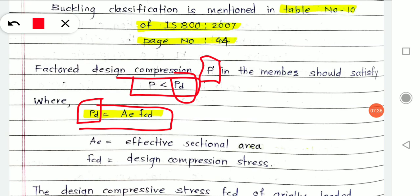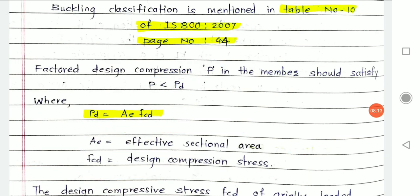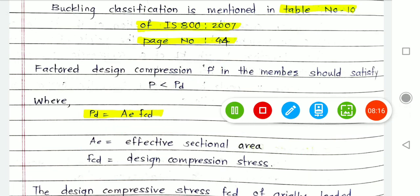Ae is the effective sectional area — whichever section you have selected from the steel table — and Fcd is the design compression stress. How to calculate design compression stress is the key question, and I am going to make you understand that in the coming slides.